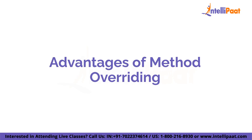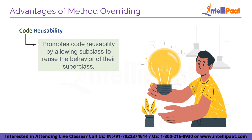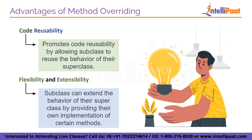Moving forward, let's look at the advantages of method overriding. The first advantage is code reusability — method overriding promotes code reusability by allowing subclasses to reuse the behavior of their superclass. Instead of re-implementing the same method in each subclass, you can override it to provide a specialized implementation. The second advantage is flexibility and extensibility — subclasses can extend or customize the behavior of their superclass by providing their own implementation of certain methods, making it easier to adapt existing code to new requirements without modifying the original class.